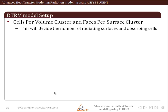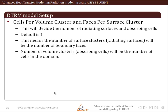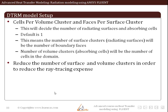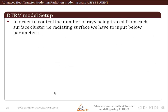Hence we need more inputs for DTRM. First is the cells per volume cluster and second is the faces per surface cluster. The cells per unit volume decides the number of radiating surfaces and absorbing cells. The default value is 1, meaning the number of surface clusters equals the number of boundary faces, and the number of volume clusters equals the number of cells in the domain. For large and complex problems, we must reduce the number of surface and volume clusters to reduce ray tracing computational expense. We decide how many surfaces participate in radiation by setting the number of surface clusters.